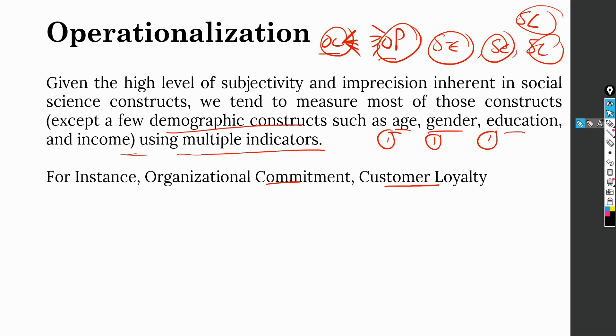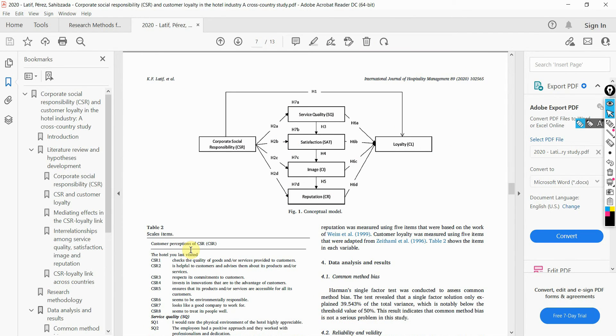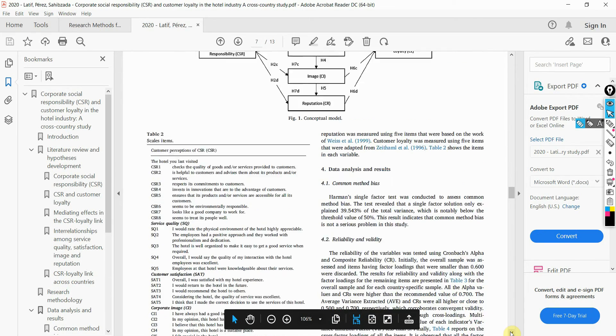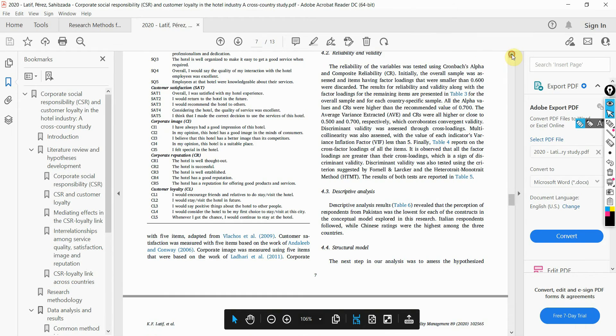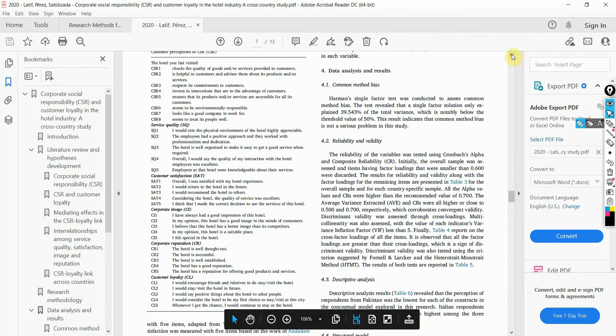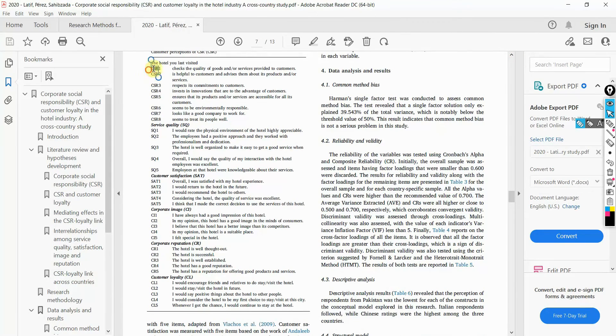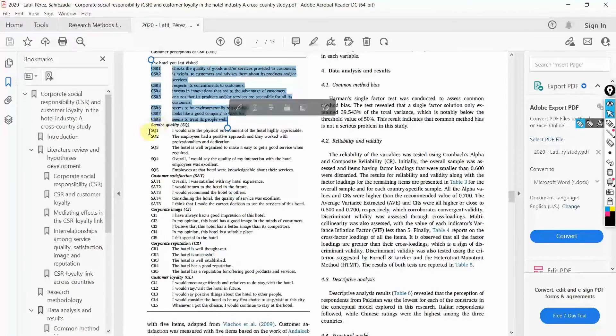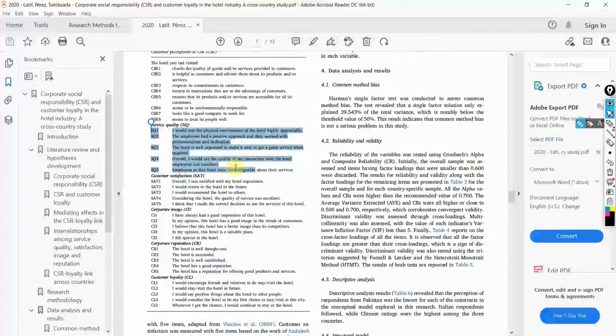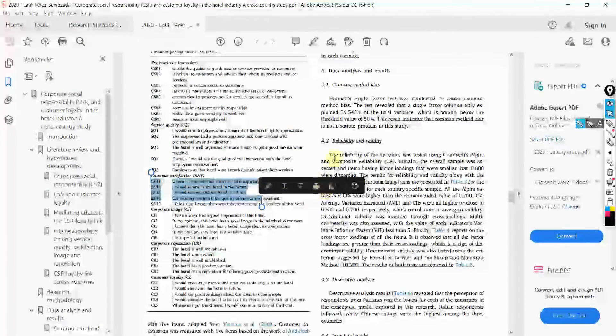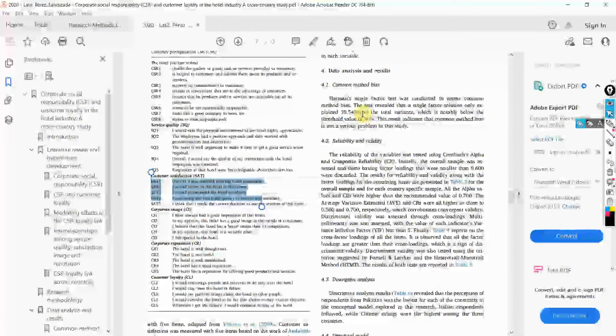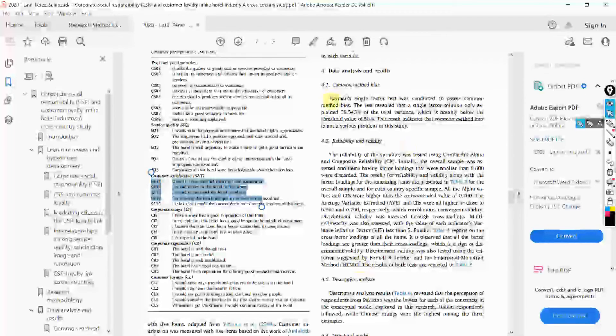Let's say we open a paper. How have they operationalized these constructs? This is how we have operationalized them. CSR is basically operationalized through these statements here - one, two, up until eight statements, service quality through these statements, satisfaction through these statements. How do you get these statements from existing research? How to search? The videos will be coming soon. Plus, there are already videos on the channel as well. Now, moving on.